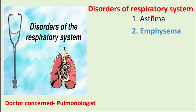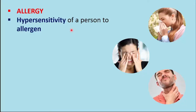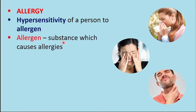The four disorders are asthma, emphysema, bronchitis, and pneumonia. These four disorders are included in our second year intermediate syllabus. Before going to the details of these four disorders, let me tell you the important points related to the allergies of respiratory system. What is allergy? Allergy is defined as hypersensitivity of a person to an allergen. The substances which cause allergies are said to be allergens.